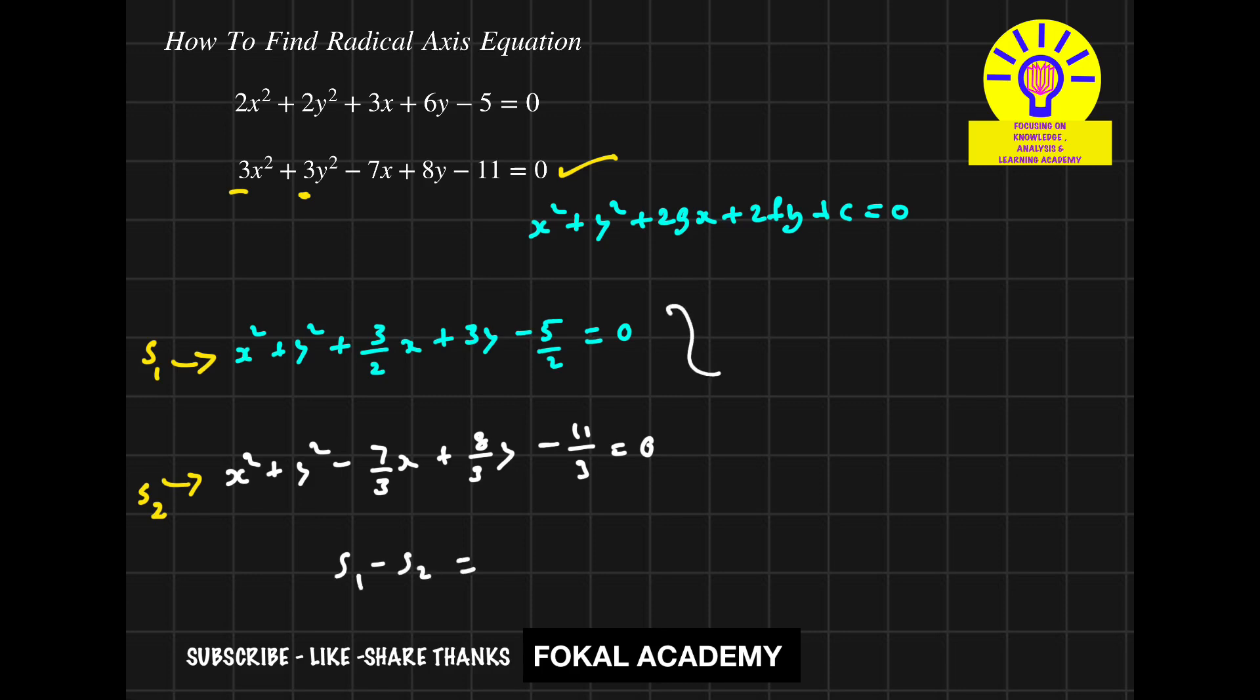By subtracting these two equations, we get 23x + 2y + 7 = 0. This is the radical axis equation for the given two circles. This is the process of finding the radical axis equation.